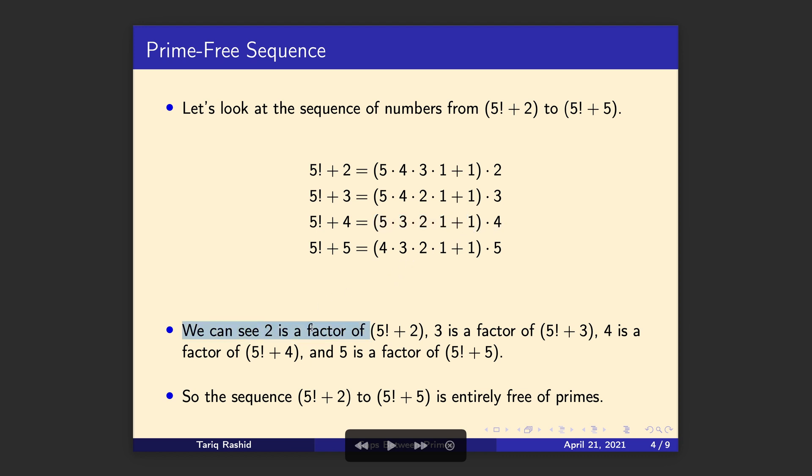So we can see that 2 is a factor of 5 factorial plus 2, 3 is a factor of this, 4 is a factor of this, 5 is a factor of this. That means none of these are prime. And that means this whole sequence from 5 factorial plus 2 up to 5 factorial plus 5 is prime free. There are no primes in that sequence. We've constructed it by design to be free of primes.